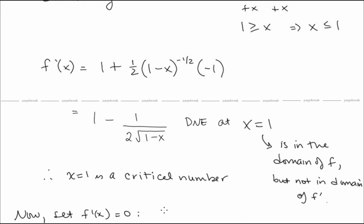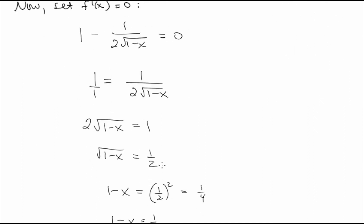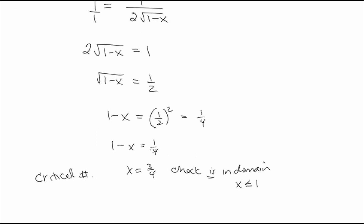Setting f'(x) = 0: 1 - 1/(2√(1 - x)) = 0, so 2√(1 - x) = 1, then √(1 - x) = 1/2. Squaring both sides: 1 - x = 1/4, so x = 3/4. Since 3/4 ≤ 1, this is in our domain and is a critical number. We now have two critical numbers: x = 3/4 and x = 1.